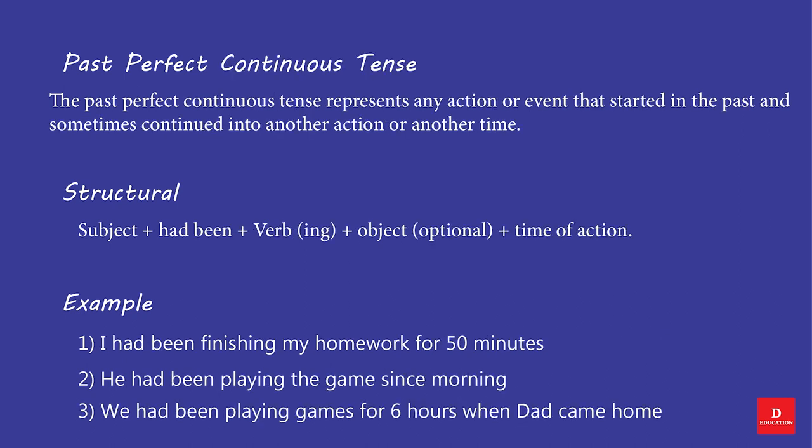Past Perfect Continuous Tense. The Past Perfect Continuous Tense represents any action or event that started in the past and sometimes continued into another action or another time. Structure: Subject + had been + Verb (-ing) + Object (optional) + Time of action. Examples: I had been finishing my homework for 50 minutes. He had been playing the game since morning. We had been playing games for six hours when Dad came home.